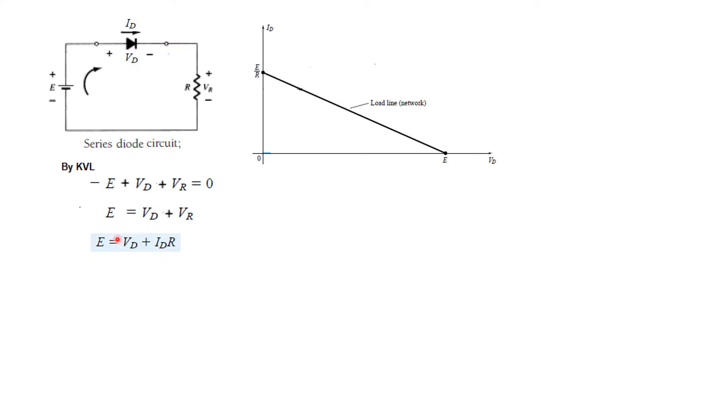Now from here we will find the two extreme points. When Vd is 0, we put Vd 0, therefore Id will be E divided by R. So this point we name E divided by R. The other extreme is when Id is 0. Then current 0 means Vd will be equal to E. So we write here point E and then we join the two and this is our load line.